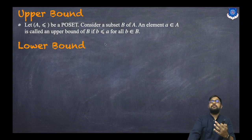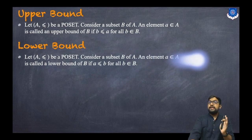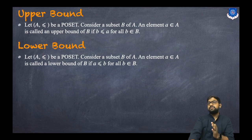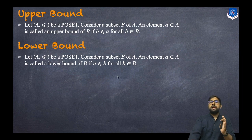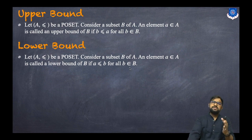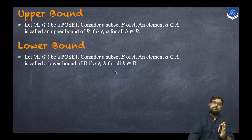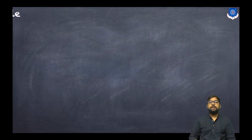Now let's discuss what a lower bound is. Let (A, ≤) be a poset and consider a subset B of A. An element 'a' belonging to A is called a lower bound of B if a ≤ b for all b belonging to B. The definitions are similar — only the inequality direction changes. Now we will proceed with examples.